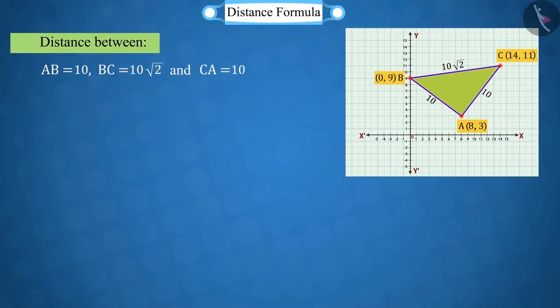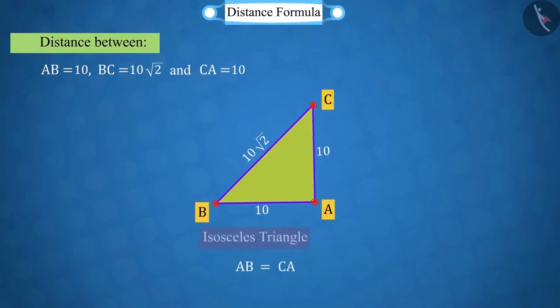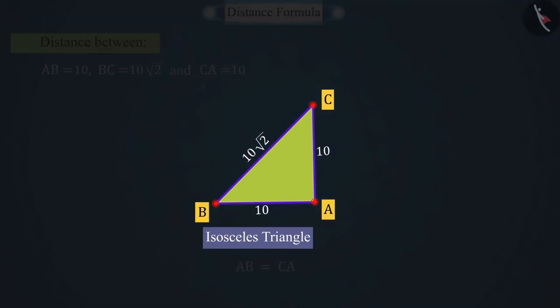If you look carefully, we get the values AB and CA as equal, which satisfies the condition of an isosceles triangle. But, we have to check for an isosceles right-angled triangle.